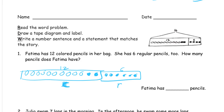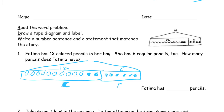How many pencils does she have? We need to find out the whole thing — the 12 and the 6 more. You can see the ones I shaded in: 6, 7, 8 — so it's 10 and 8, it's 18. Our equation is going to be: the 12 colored pencils plus the 6 regular pencils equals 18 pencils.